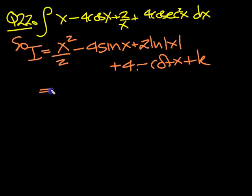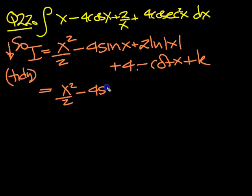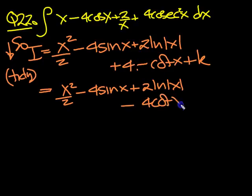So let's tidy that up then. So there's the integration. Now we tidy. So we've got x squared over 2, minus 4 sin x, plus 2 ln modulus of x. Plus and a minus make a minus, so minus 4 cot x plus k at the end.